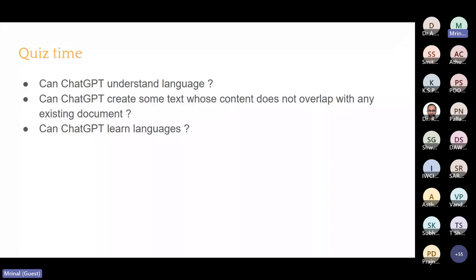Some questions to think about: Can ChatGPT really understand language? You have some understanding of ChatGPT before this session — let us see whether your answers change. Can ChatGPT create text whose content does not overlap with any existing document? This is a very large deep learning model trained on all possible text available on the internet. Now suppose you have some private document — if you ask a question about it, will ChatGPT be able to answer? Can ChatGPT answer questions in Tamil or any other language? What are the limitations and the powers of ChatGPT?